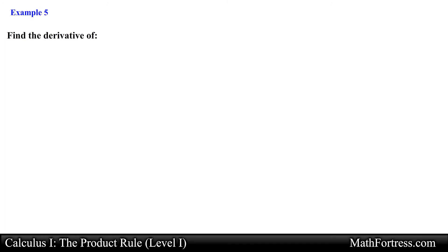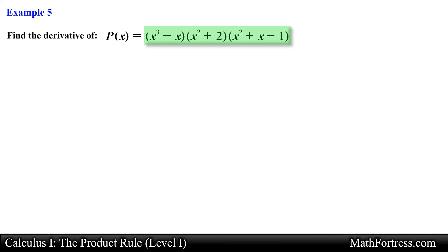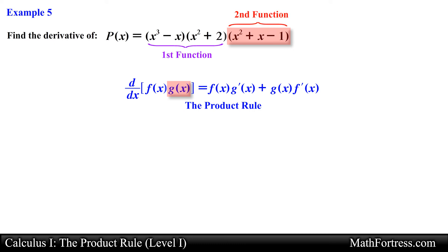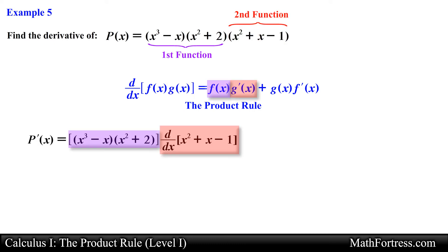Alright let's try the final example. Find the derivative of p of x equals the quantity x cubed minus x times the quantity x squared plus 2 times the quantity x squared plus x minus 1. Notice that we have three functions being multiplied. One way we can find the derivative is to apply the product rule by assigning the product of two functions as our f of x and assigning the third function as our g of x, then carrying out the product rule with these assignments.